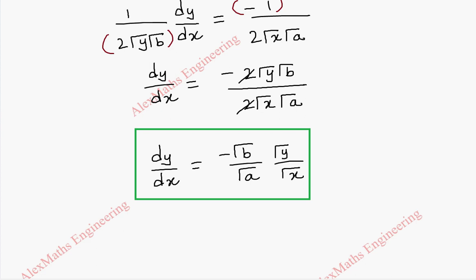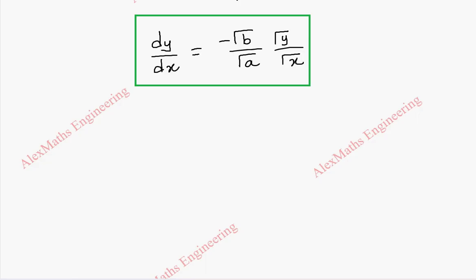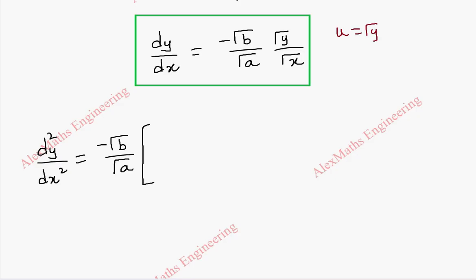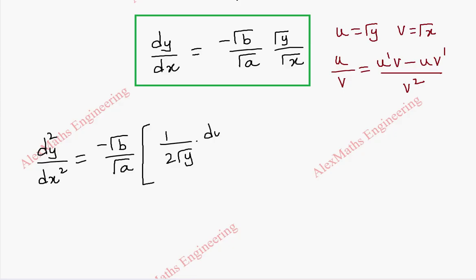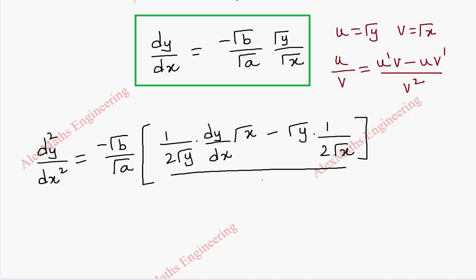Now we have to find the second derivative. We are going to use the quotient rule (u by v method). When we write d squared y by dx squared, the constant minus root b by root a is kept separately. Here u is root y and v is root x, following the formula u dash v minus u v dash by v squared. So u dash is 1 by 2 root y into dy by dx, v is root x, and v dash is 1 by 2 root x, all divided by v squared, which is x.